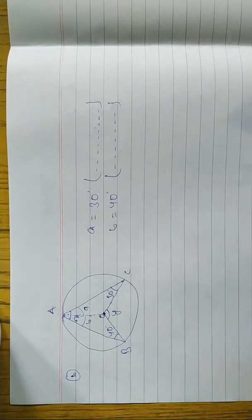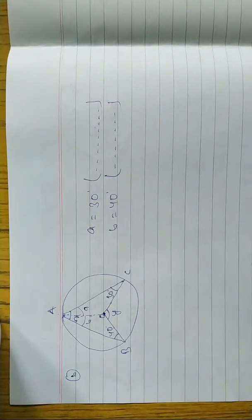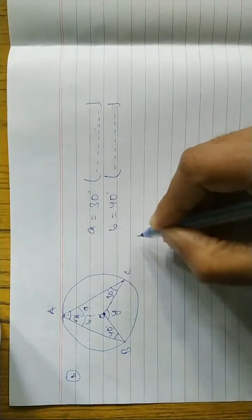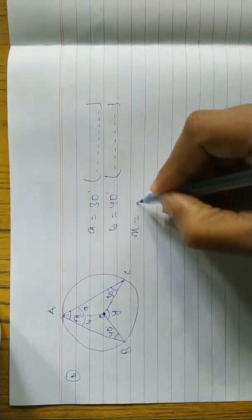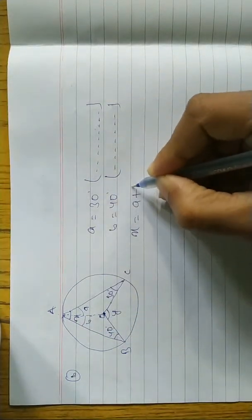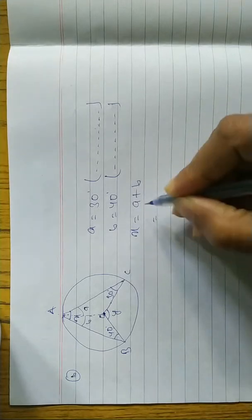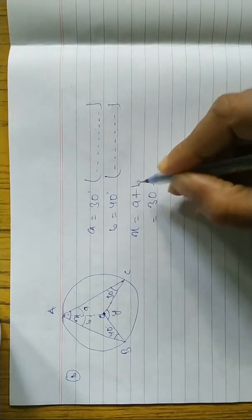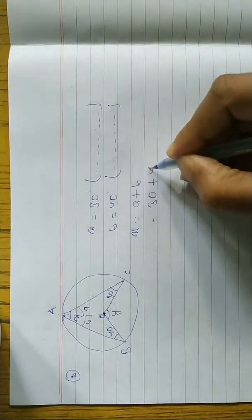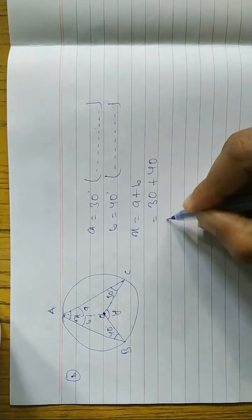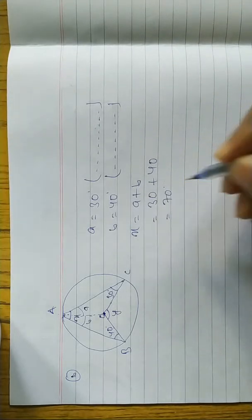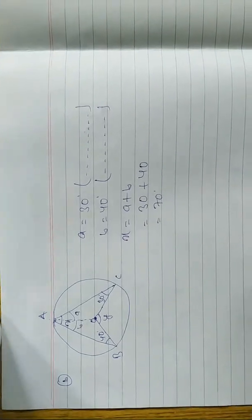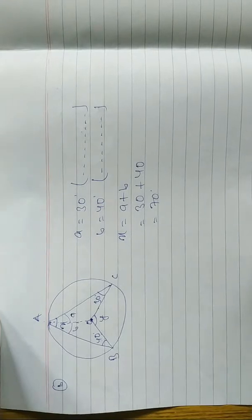Now to find x: x equals A plus B equals 30 plus 40, therefore x equals 70 degrees.